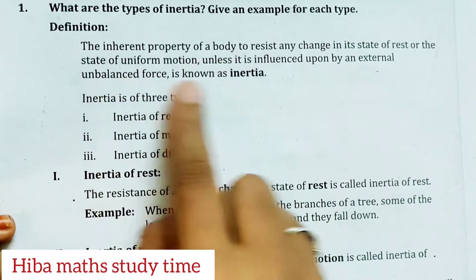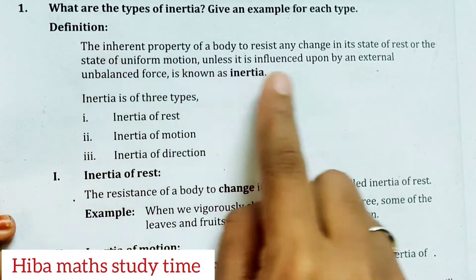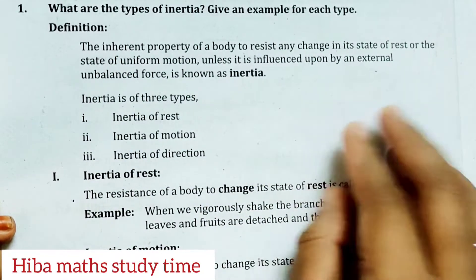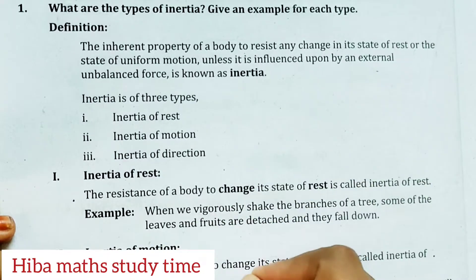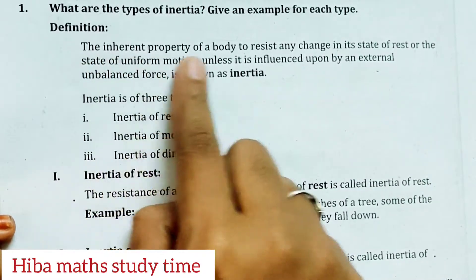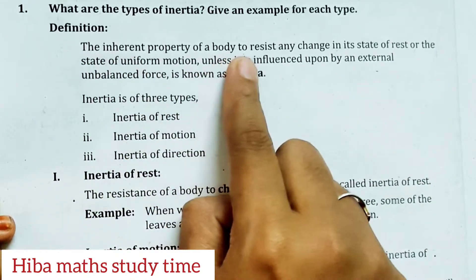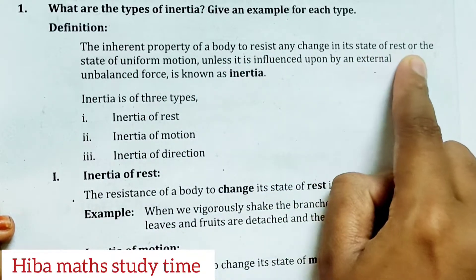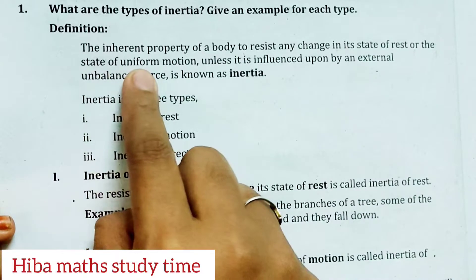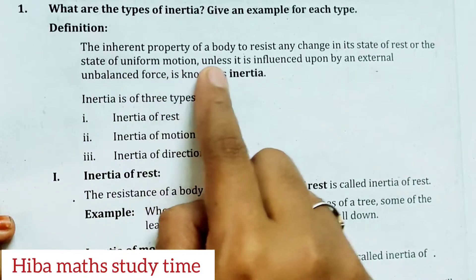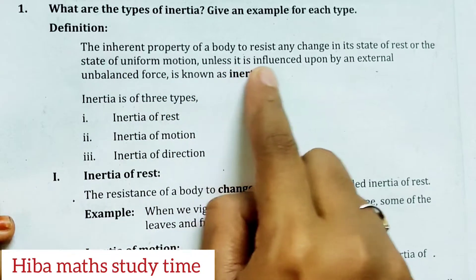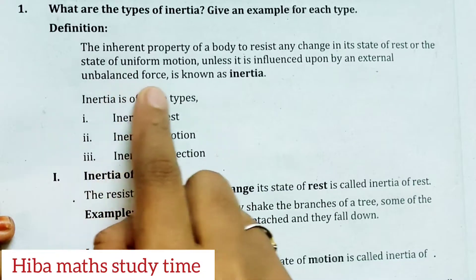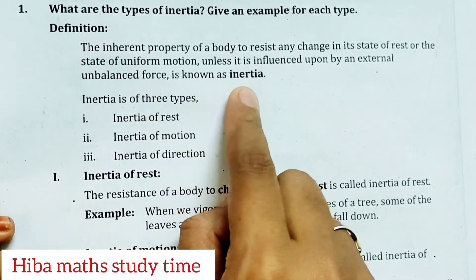So, if you haven't read the letters yet, watch the previous video and learn. If you understand the letters and can read them, write down the characters. The inherent property of a body to resist any change in its state of rest or the state of uniform motion, unless it is influenced upon by an external unbalanced force, is known as inertia.